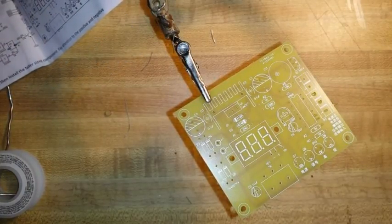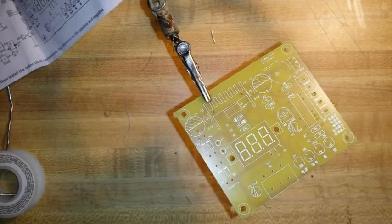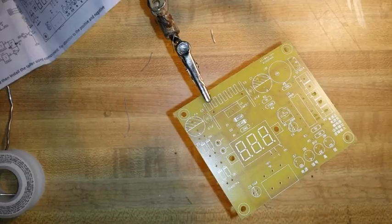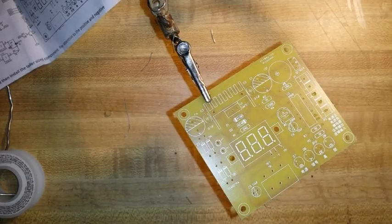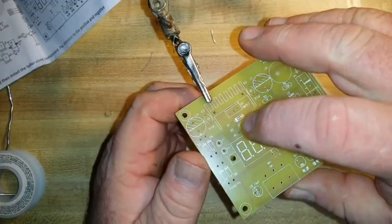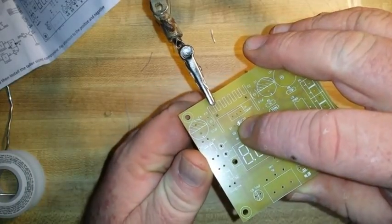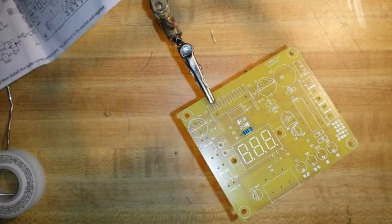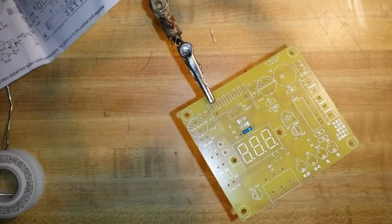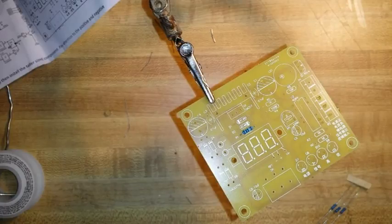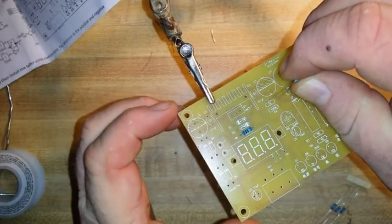All right, we are building the Banggood LM317 based benchtop power supply module. I'm going to start with the resistors. That was the 240 ohm that works with the potentiometer as a voltage divider off of the LM317 regulator.